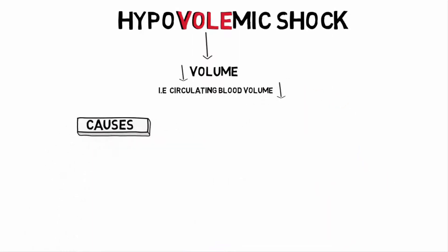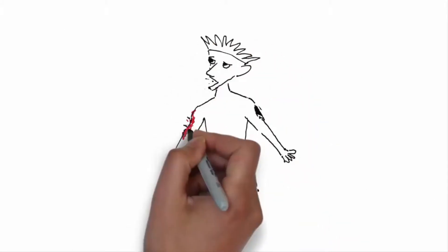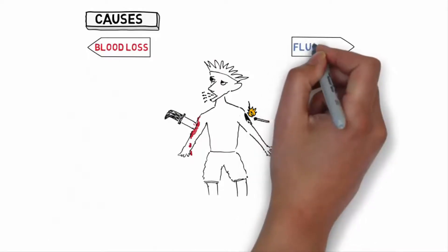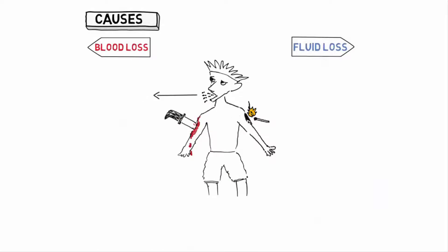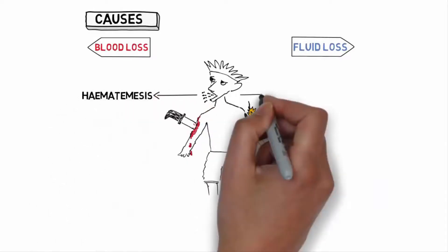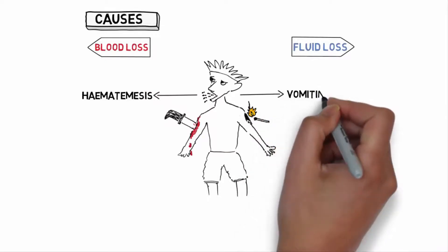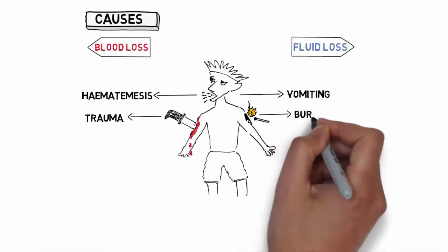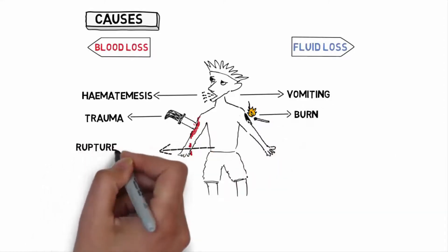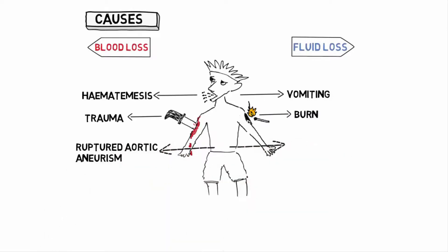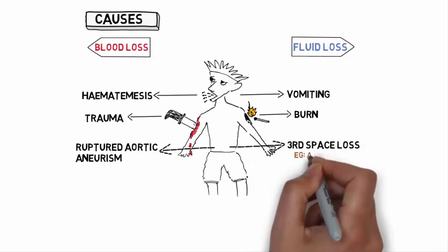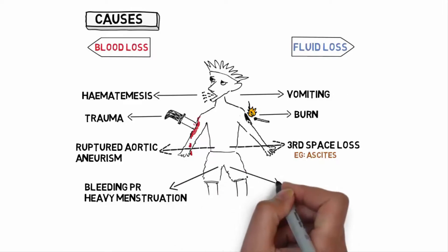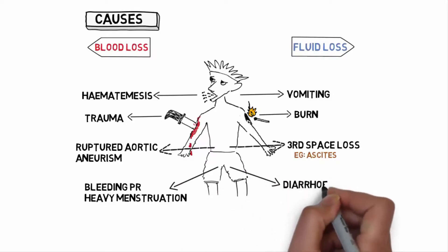Let's look at the causes of hypovolemic shock using a simple diagram which is easier to remember. Reduction in volume could be due to loss of blood or loss of fluid. By mouth, blood is lost as hematemesis and fluid is lost on vomiting. In external loss, trauma could cause blood loss and burn could cause fluid loss. There can be internal causes — for example, ruptured aortic aneurysm and third space loss as seen in ascites. Bleeding per rectum, heavy menstruation, and fluid loss via diarrhea also would rarely lead to hypovolemic shock.